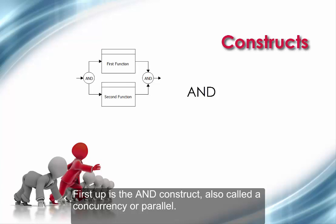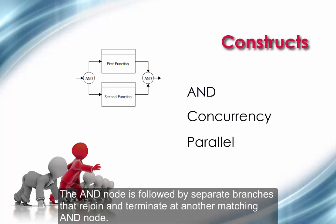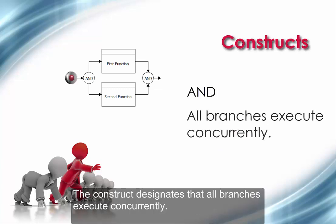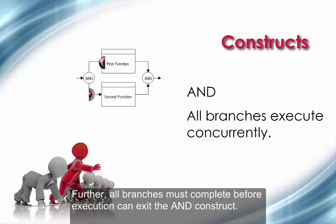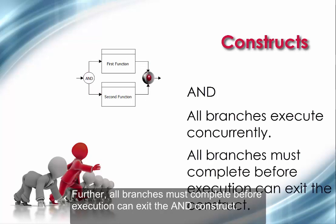First up is the AND construct, also called a concurrency or parallel. The AND node is followed by separate branches that rejoin and terminate at another matching AND node. The construct designates that all branches execute concurrently. Further, all branches must complete before execution can exit the AND construct.